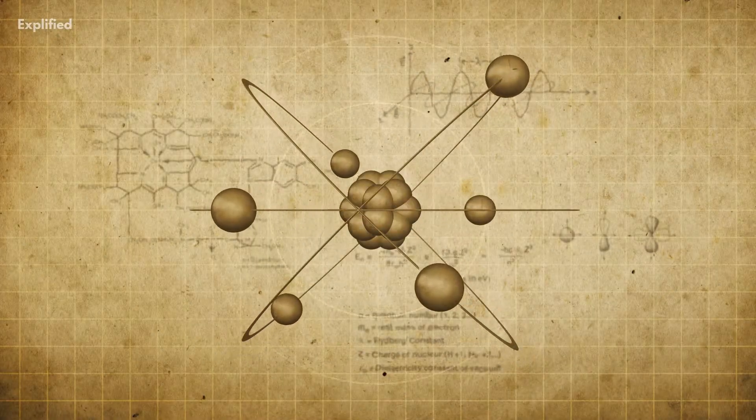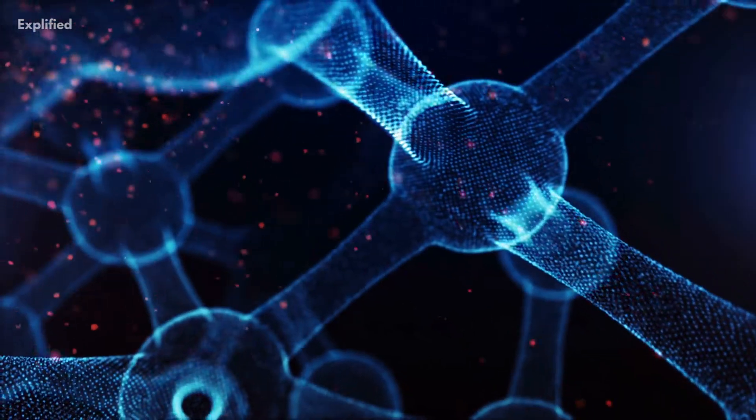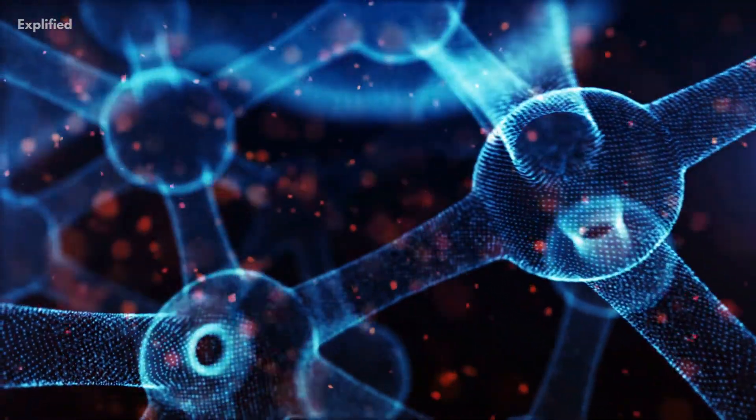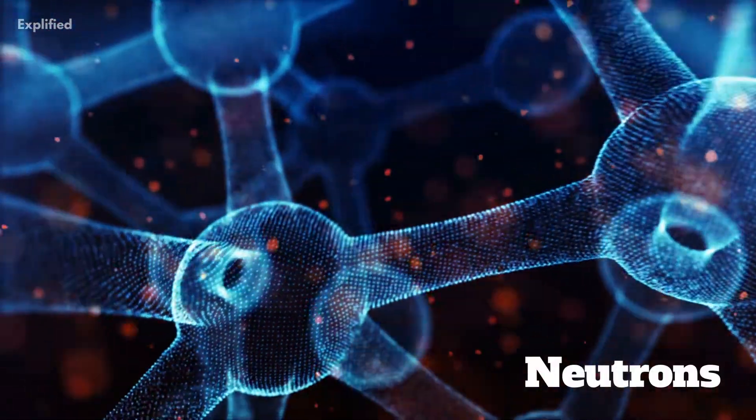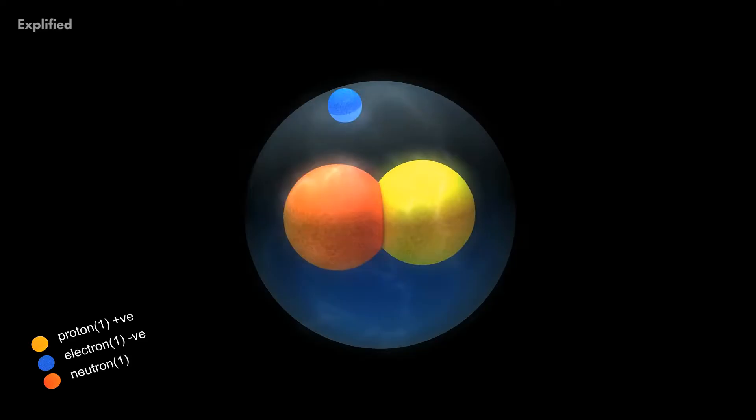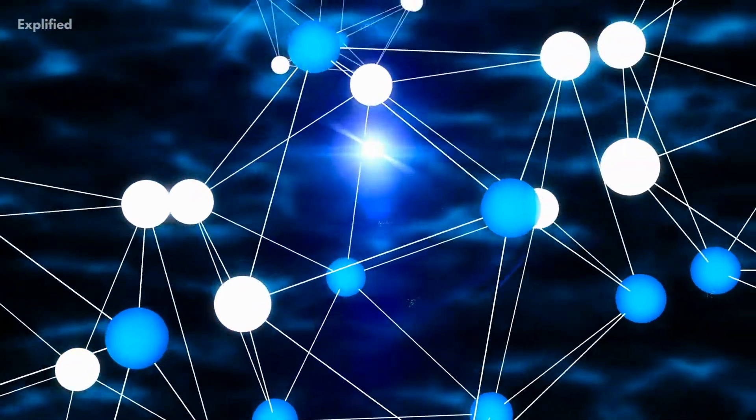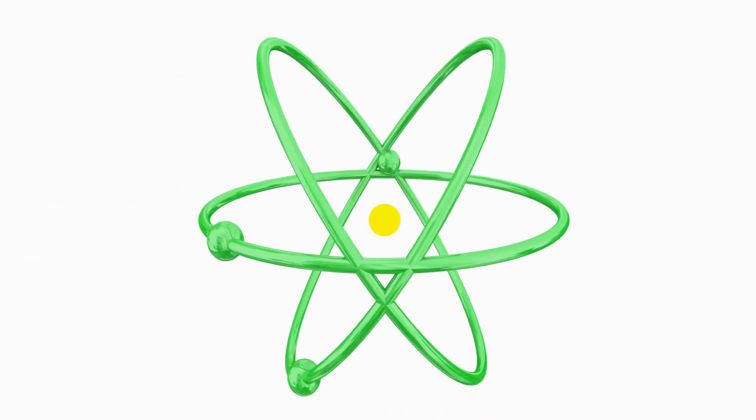So, let's start by looking at the structure of an atom. At the center of an atom is the nucleus, which is composed of protons and neutrons. Protons are positively charged particles, while neutrons are neutral. They are held together by the strong nuclear force, and this force is what makes it possible for atomic nuclei to exist.